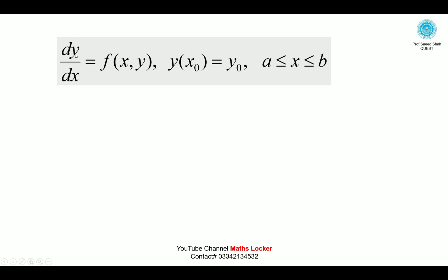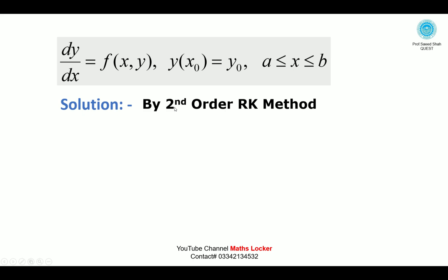Here is a first-order differential equation: dy/dx = f(x, y), with initial condition y(x₀) = y₀. This is the initial value problem, where x is between a and b. The solution is obtained by the second-order Runge-Kutta method.